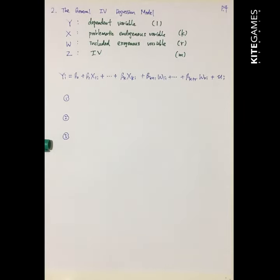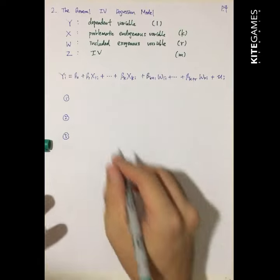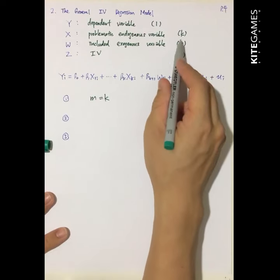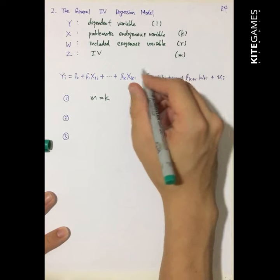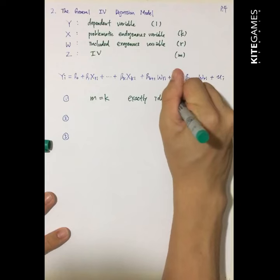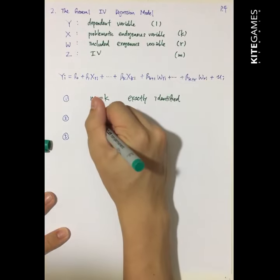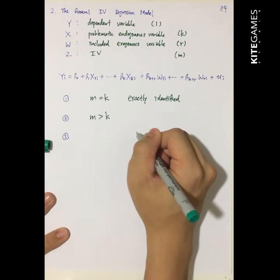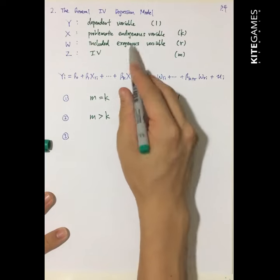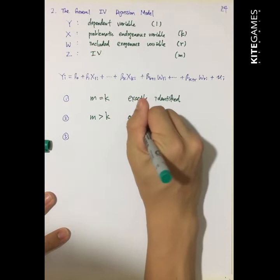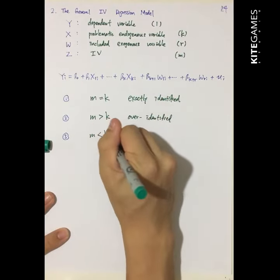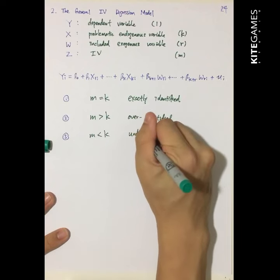So you have three cases. First, m equals k — the number of instruments equals the number of endogenous variables — we call this exactly identified. If m is greater than k, meaning the number of IVs is higher than the number of endogenous variables, we call this over-identified. While if m is less than k, we call this under-identified.